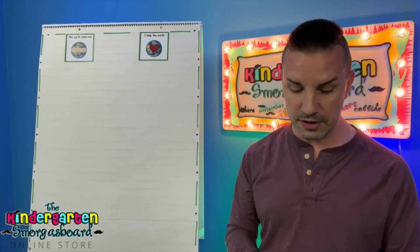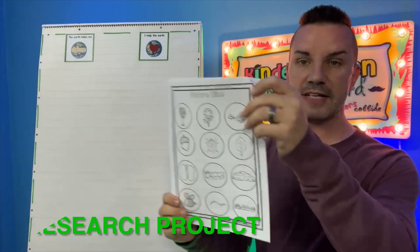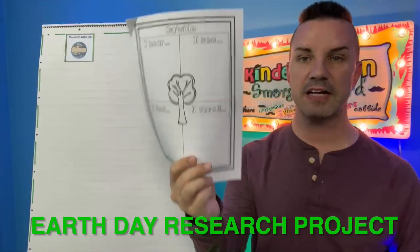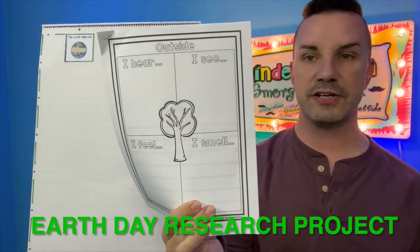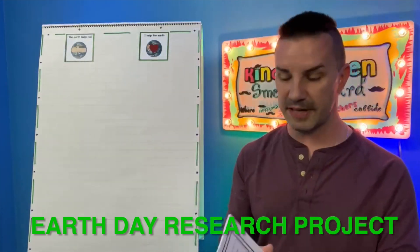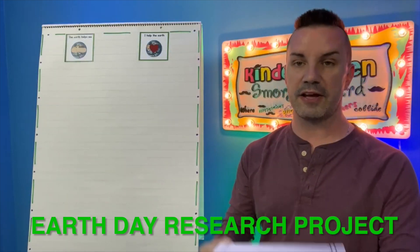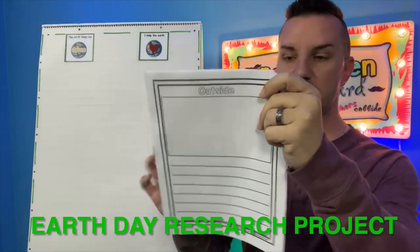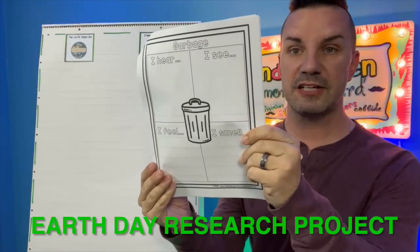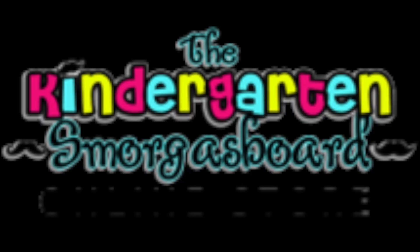You're also going to have a nature hike, so you can go outside and go on a nature walk and see what you can find. Students can use their senses to describe the outdoors and write about the outdoors, and they can use their senses to describe garbage and write about garbage.